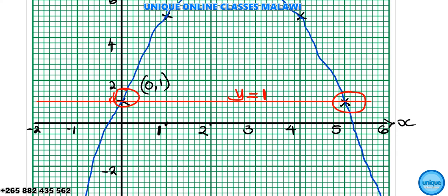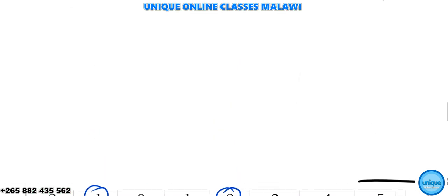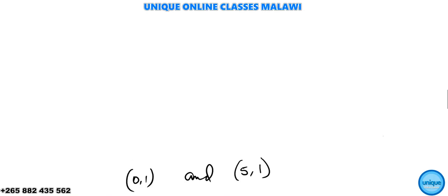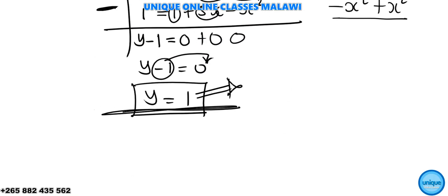At this point here, x is 0 and y is 1. And at this other point, x is 5 and y is 1. So after solving graphically, x is 0 or x is 5. Those are your two intersection coordinates: (0, 1) and (5, 1). This is how you solve this equation using the graph.